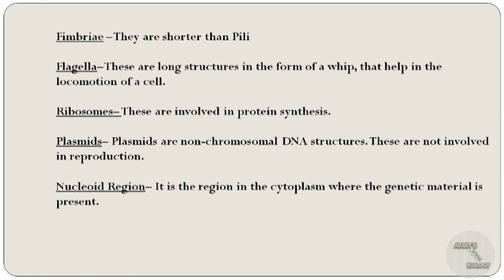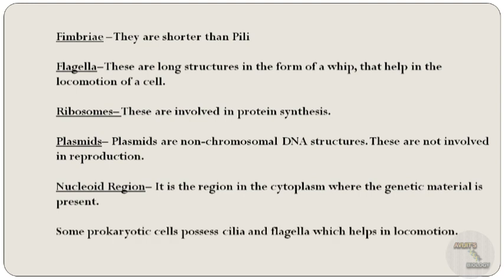Next is the nucleoid region. The nucleoid is an irregularly shaped region within the prokaryotic cell that contains all or most of the genetic material of the cell. The chromosome of a prokaryote is circular, and its length is very large compared to the cell dimensions.